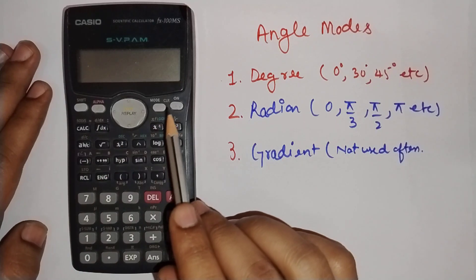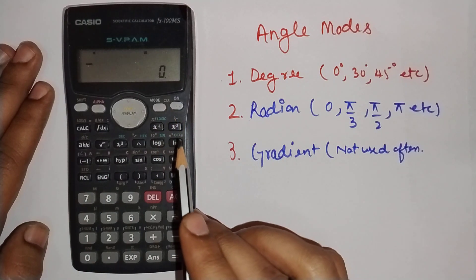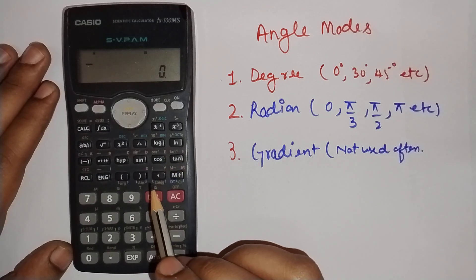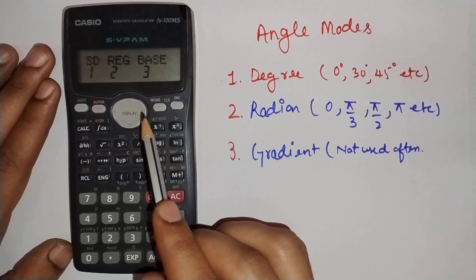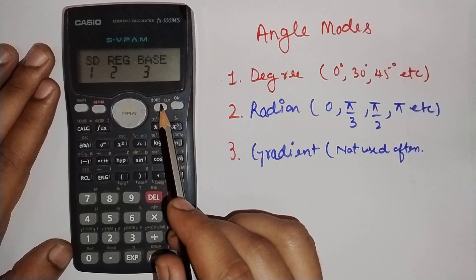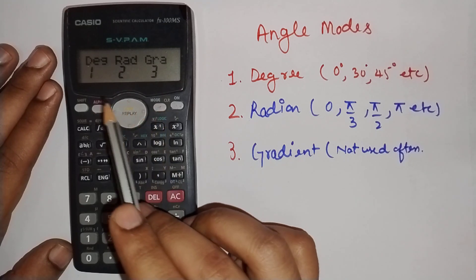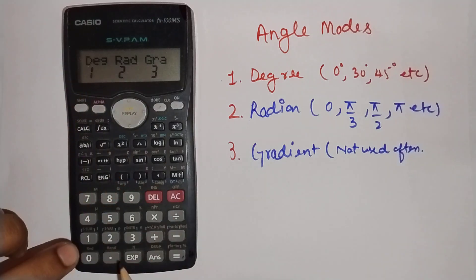In today's video, we will see how to change angle modes in a scientific calculator. To change to degree, press mode, mode, then again mode. It shows degree here, degree 1. Pressing 1 will switch to degree mode.